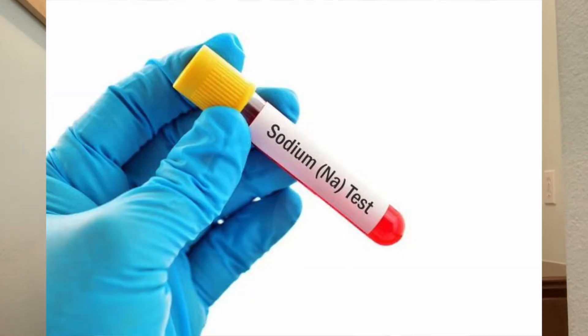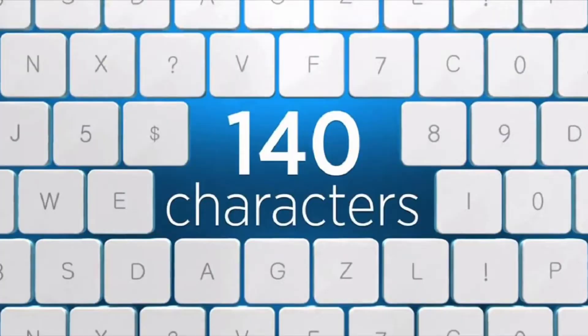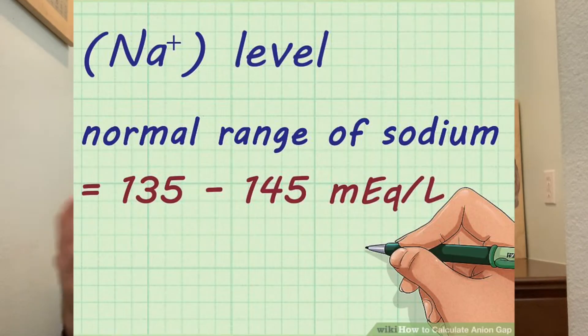First up is sodium. Since it's the first one on our list of ranges and limits, let's think about the character limit for Twitter, or at least the old character limit. The old character limit was 140 characters. So roughly, it's about 140 milliequivalents per liter of sodium. So the range is 135 to 145.